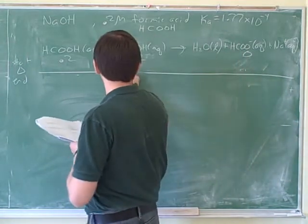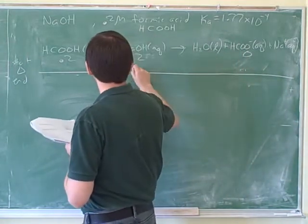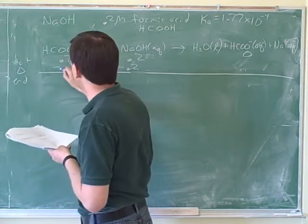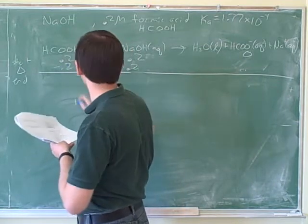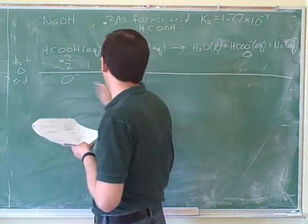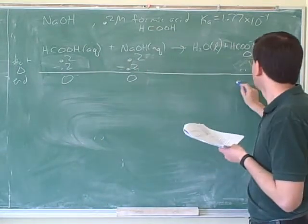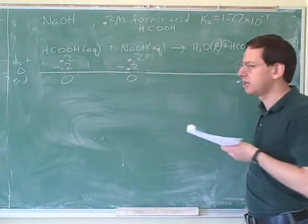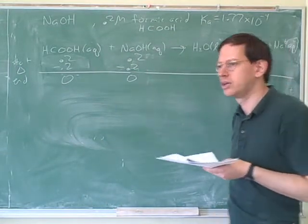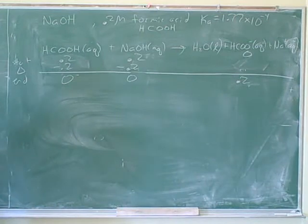So the change would be 0.2, because the reaction is going to completion. So what are our ending amounts? Zero. And the other ending amounts? 0.2. Now we do the ICE table. Now which case are we in now?